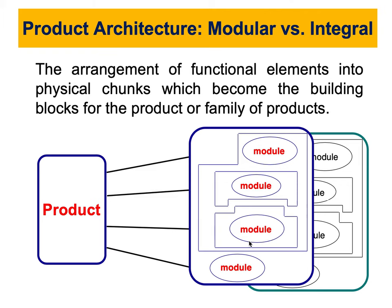Integral architecture is often used when the design is aimed at achieving the highest possible performance. If you want to optimize performance with a small number of components or chunks, you use integral architecture. If you want simplicity — where you can go to a specific chunk and change the module and components within it — you use modular architecture.